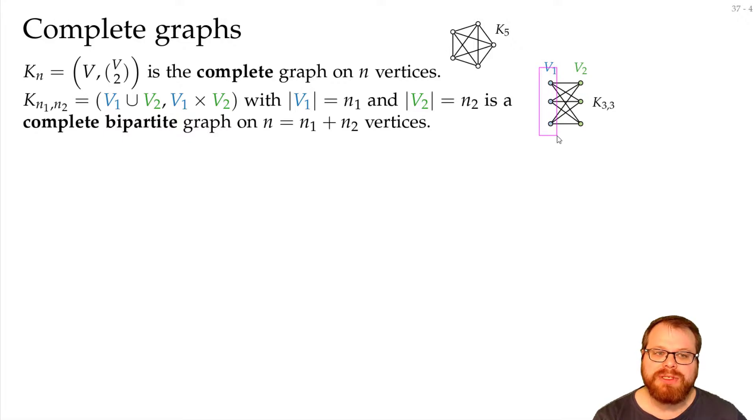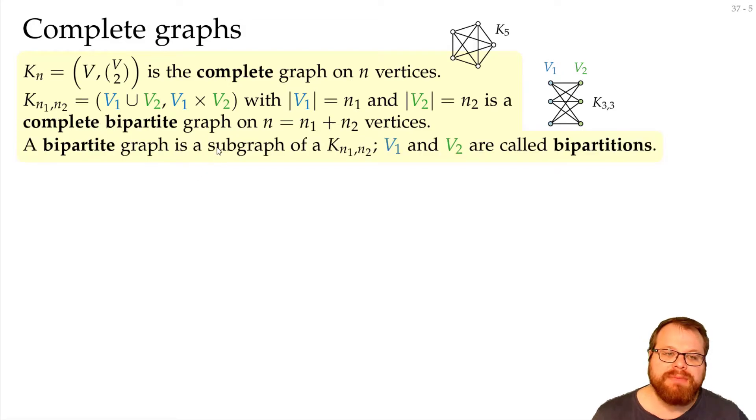But these blue vertices here, they are not connected to each other, and the green vertices are also not connected to each other. In general we call graphs bipartite if they are subgraphs of complete bipartite graphs. So if we have two subsets of vertices where inside each of these subsets there is no connection. And we call these subsets bipartitions.